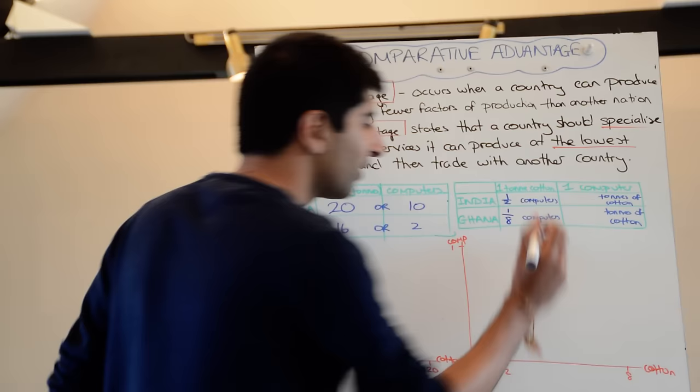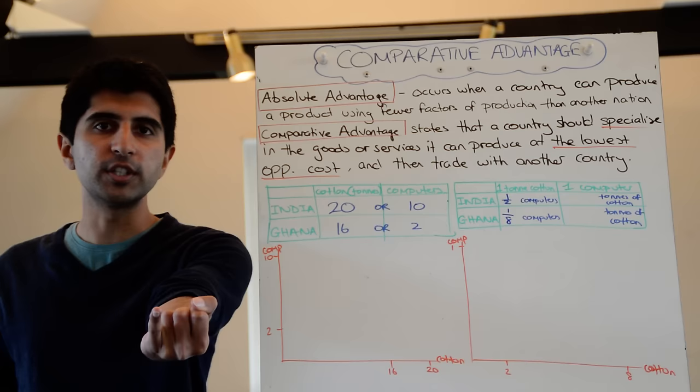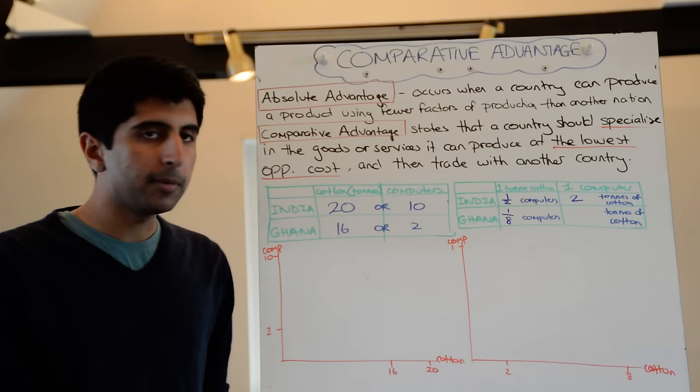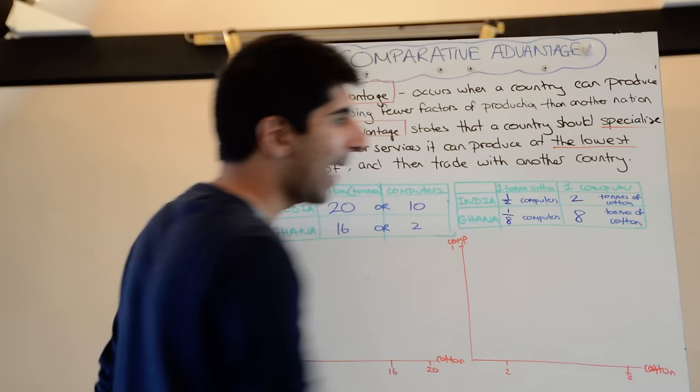Let's do the same for computers. For India to produce one computer, how many tonnes of cotton are they giving up? Divide both sides by 10 — they're giving up two tonnes of cotton. What about Ghana to produce one computer? How many tonnes of cotton are they giving up? Divide both sides by two — Ghana has to give up eight tonnes of cotton to produce one computer.